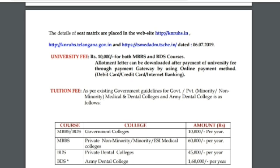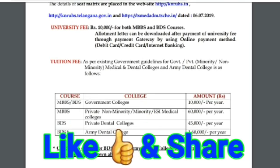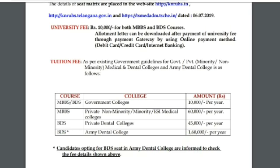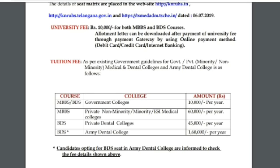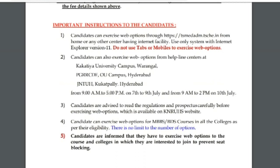You can see the allotment download and the online fee details. As per government guidance: government, private minority, and medical dental colleges, army dental college — MBBS/BDS government colleges 10,000 per year; private non-minority ESA college 60,000 per year; BDS private dental college 45,000 per year. Army dental college 1,000,000 per year. You can apply as per government norms.